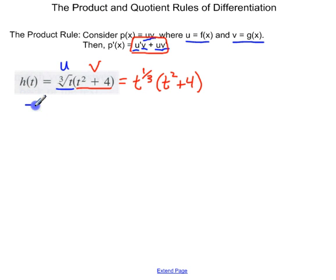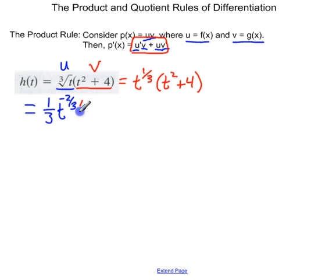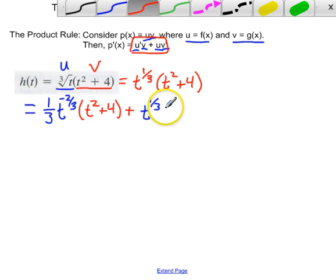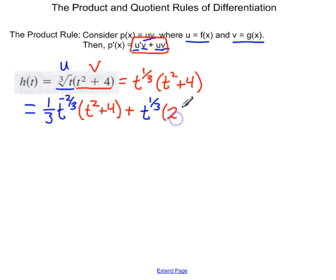So u prime is going to be 1 third t to the negative 2 thirds — in other words, we're doing the power rule. That's u prime. Here's v: t squared plus 4. Plus u, that's t to the 1 third, times v prime, which is 2t.